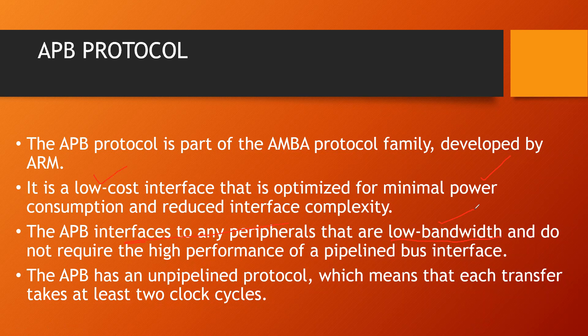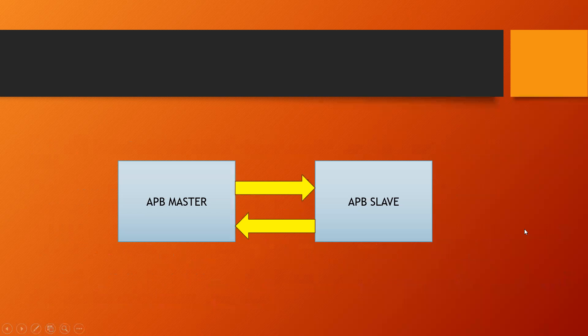APB has an unpipelined protocol, meaning each transfer takes at least two clock cycles. It is not pipelined — one process completes before the next begins. Any device that initiates the transfer is called a master, and the one which responds to that initiation request is a slave. These are the two APB devices.